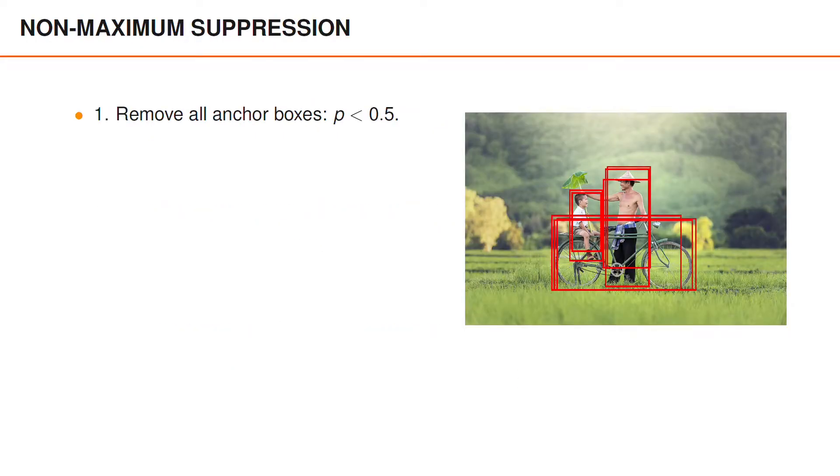The most commonly used solution to this problem is to use something called non-maximum suppression. This algorithm actually starts by removing bounding boxes for which the probability that there is an object is smaller than 0.5. The red rectangles in the figure illustrate a possible set of bounding boxes that we may be left with after this step.